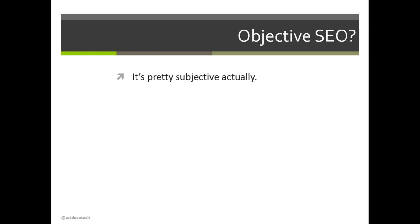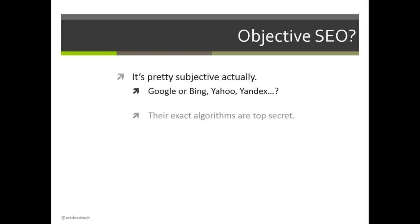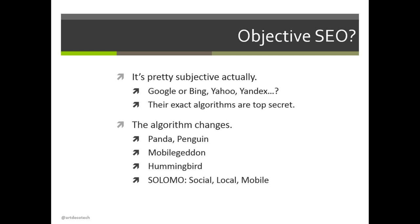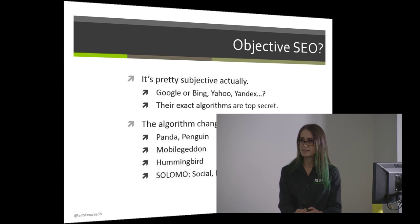Objective SEO is actually pretty subjective because it depends on who you ask — all different search engines have their own algorithms, and those algorithms are kept secret so people can't game them. There are ways people do SEO negatively, like buying links or stuffing keywords. Google made over 400 algorithm changes last year alone. The Panda and Penguin updates address white hat and black hat practices — buying links or using spam will get you penalized. The mobile update meant that websites with a good mobile user experience get ranked higher.